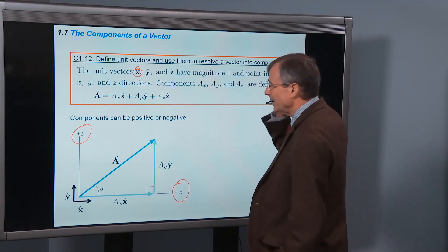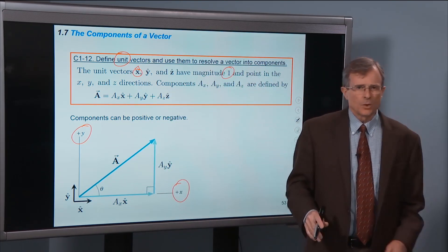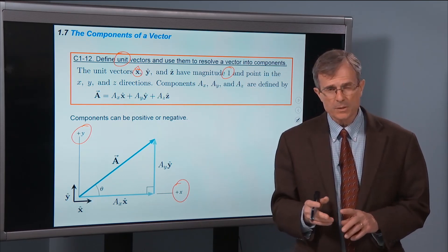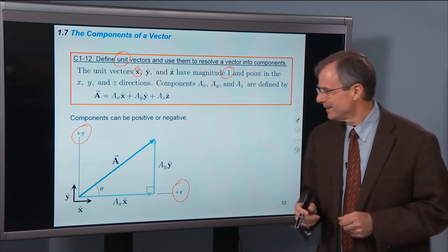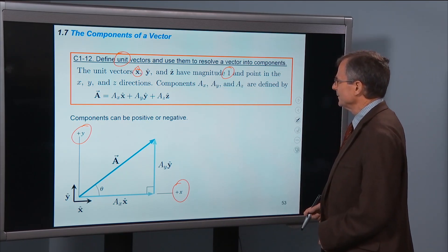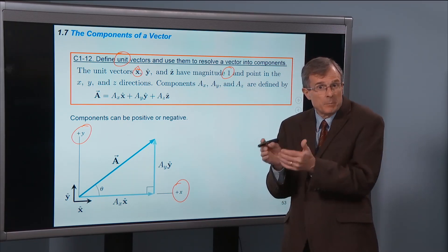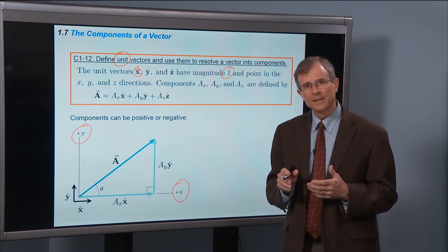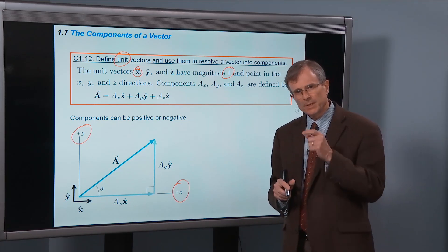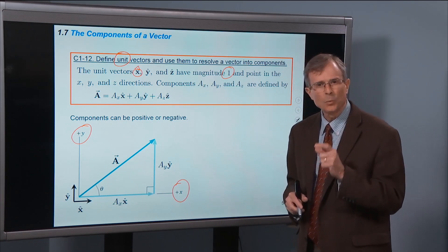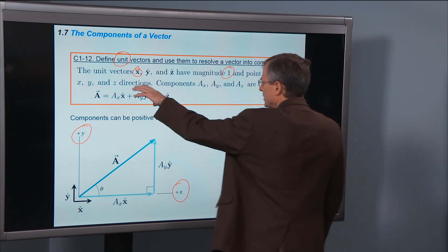And the reason we call these unit vectors is because they have magnitude 1. So they don't have any units. There are no units associated with unit vectors. Unit means 1 in this case. And by units, I could have been confusing. By units I mean they don't have any dimensions. They're not measured in meters or anything like that. They're unitless or dimensionless vectors. But they're called unit vectors because their magnitude is 1. So they have magnitude 1, point in the x, y, and z directions.